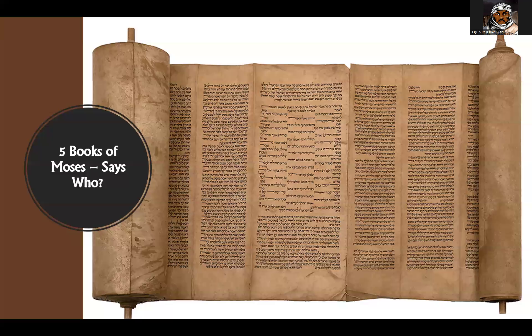As with the title of this video, one of the things some people don't realize — especially those who have an anti-oral Torah slant — is the idea that there are five books of Moses is also an oral Torah concept. Because who says that there are five books of Moses? Where does that come from in the text itself? If you look in the Torah, where do you find that there are five books? Why aren't there like 10 or 12?